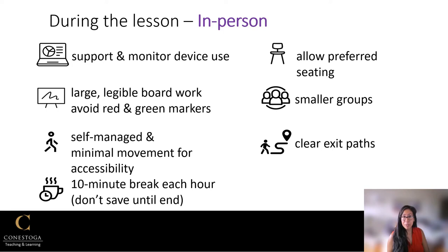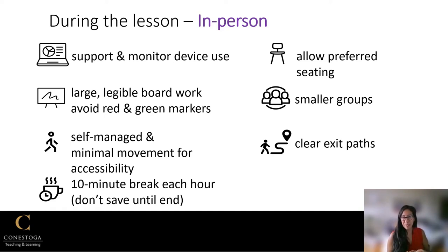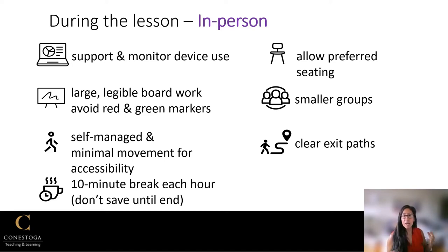Allow for preferred seating so that students can sit where they please, and those with accessibility needs — vision or auditory needs — can sit in the front. Work in smaller groups when engaging students and testing their learning, using where students are already seated so they don't have to move around as much. One other important piece is to ensure that coats and backpacks are stowed away so that we have clear exit paths.